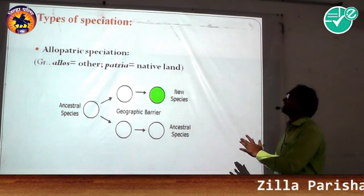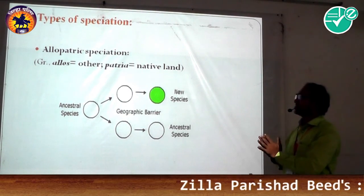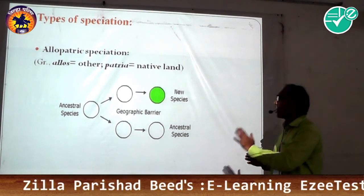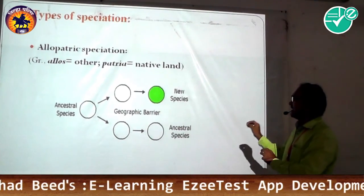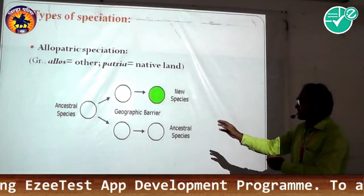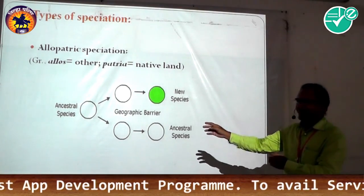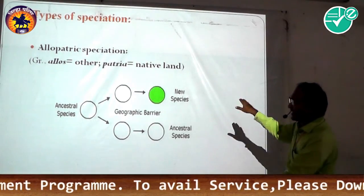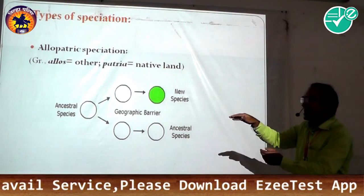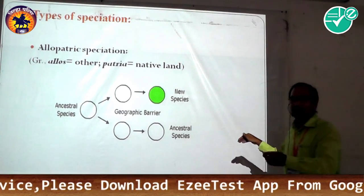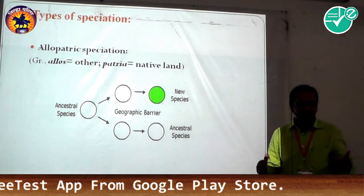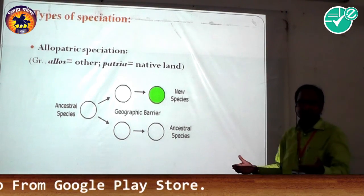The first type of speciation is allopatric speciation. 'Allopatria' is a big word — 'allos' means other land, and 'patria' means the natal land. Here, I represent this diagram. There is the presence of an ancestral population which gets bifurcated or divided into two groups, and both groups are separated by a geographical barrier — like an ocean, mountains, forest, or river.